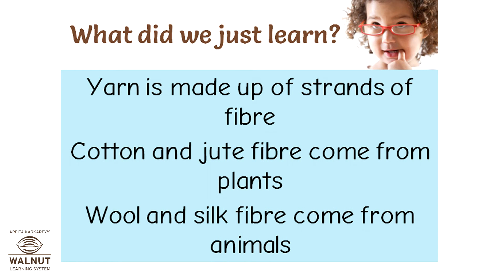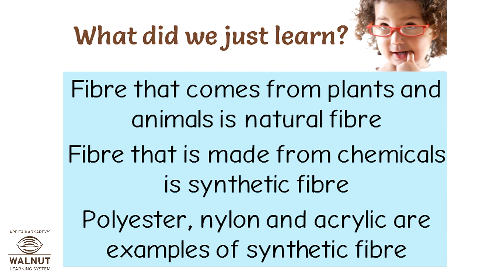What did we just learn? Yarn is made up of strands of fibre. Cotton and jute fibres come from plants. Wool and silk fibres come from animals. Fibre that comes from plants and animals is natural fibre. Fibre that is made from chemicals is synthetic fibre.